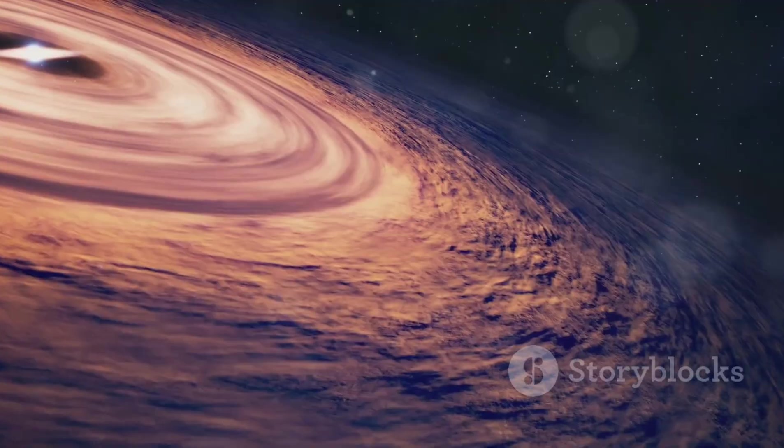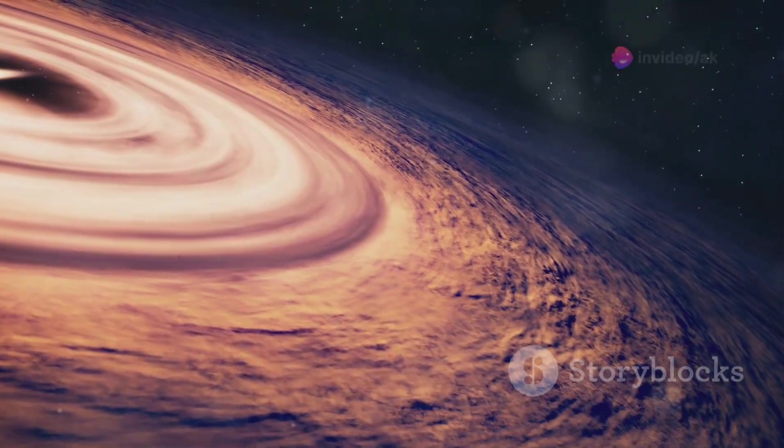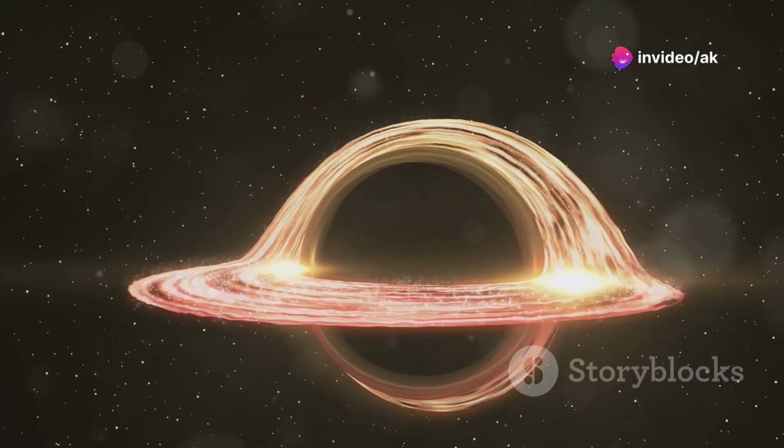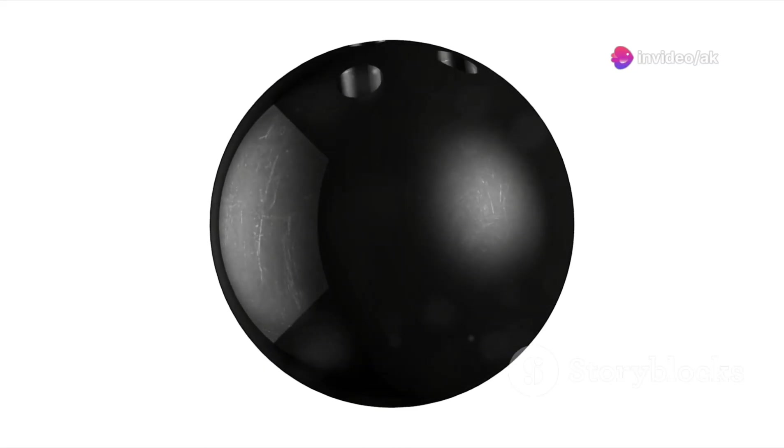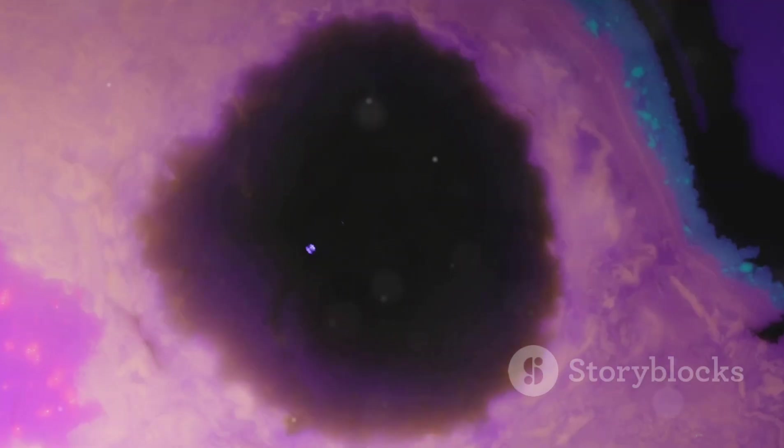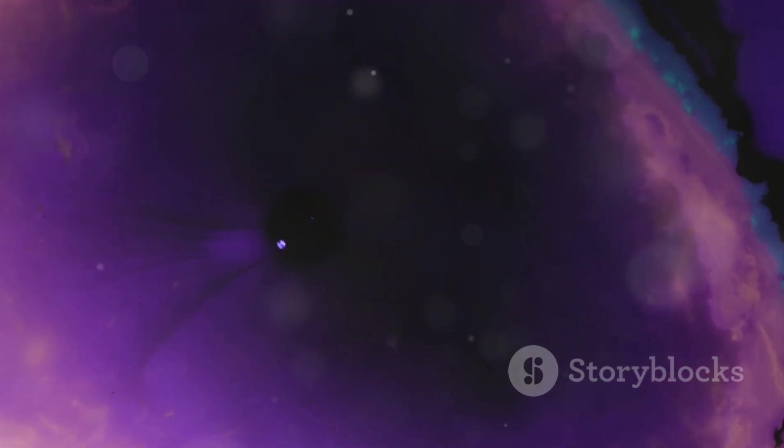Black holes don't suck things in like vacuum cleaners. They warp the fabric of space-time itself. Imagine a bowling ball on a trampoline. It creates a dip, a curvature. That's what a black hole does to space-time.